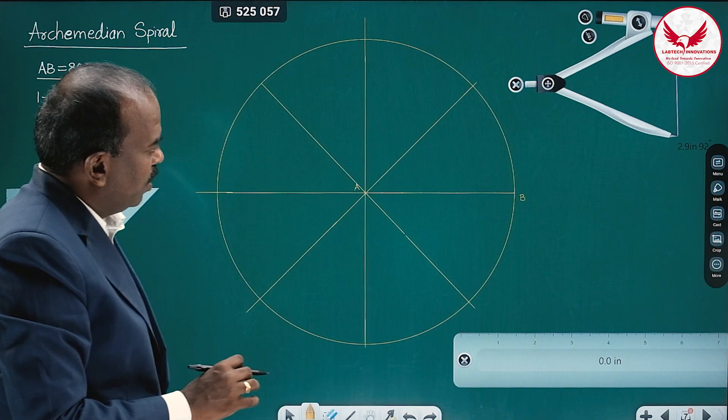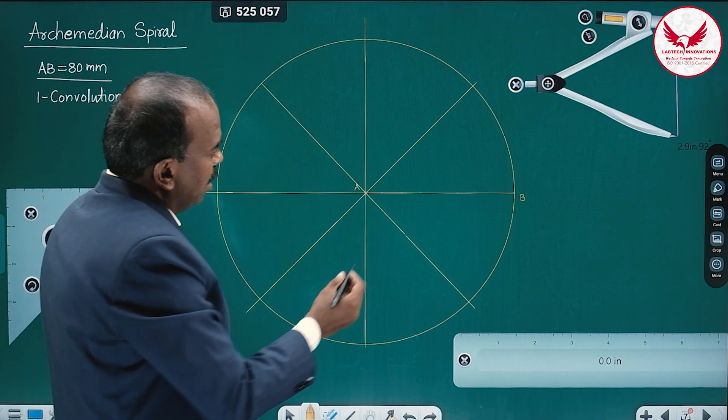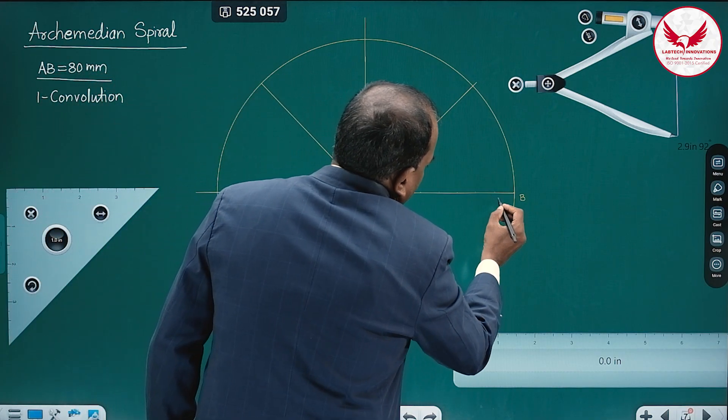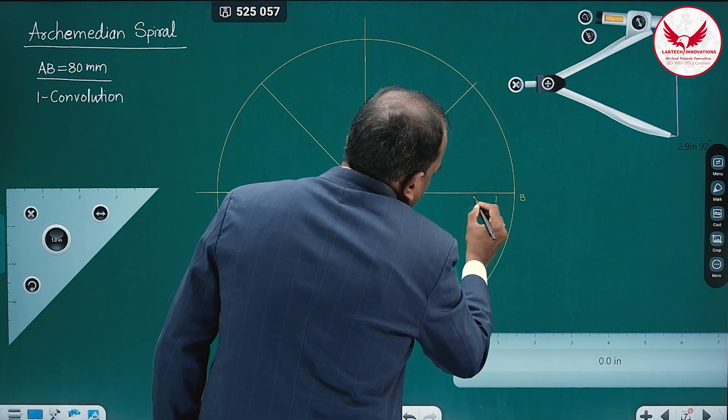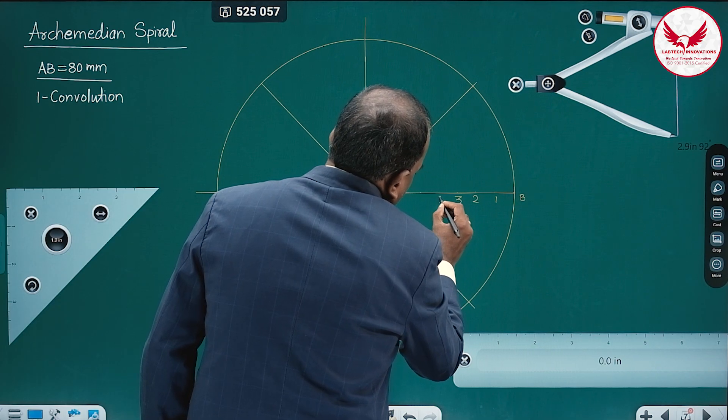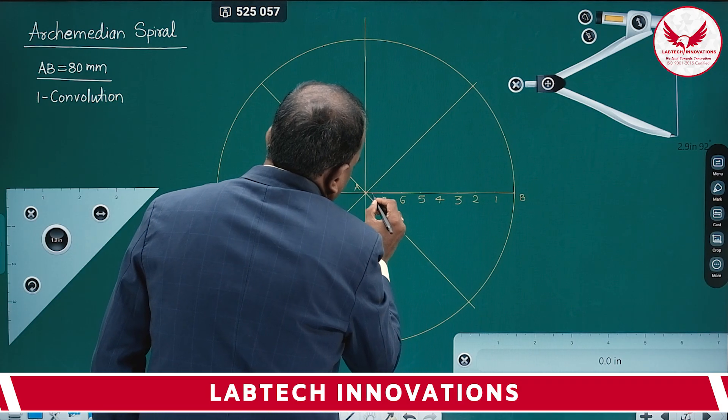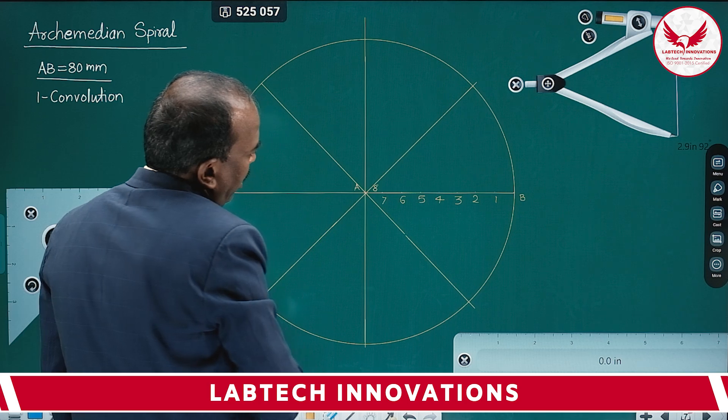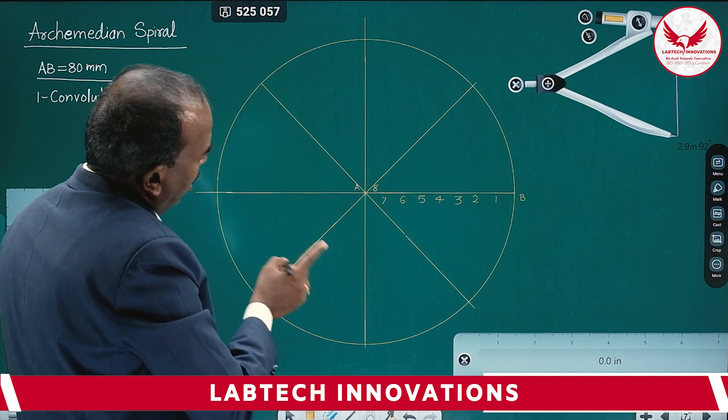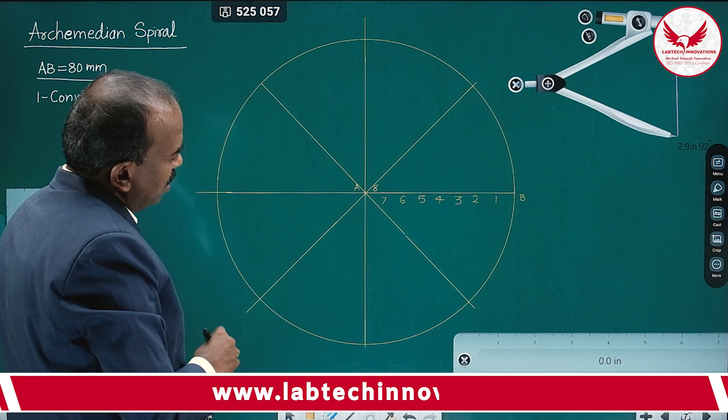Now numbering is very important. How we have to give the number? So from B, it is going to be 1, 2, 3, 4, 5, 6, 7, and 8 means that point A only. I am giving that name on upper side because it may intersect later on the curve.